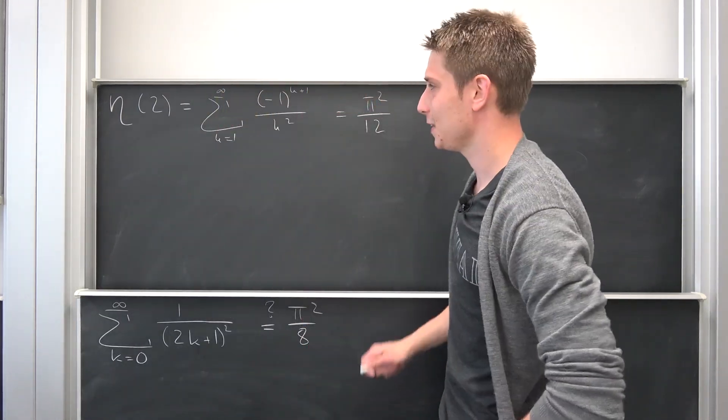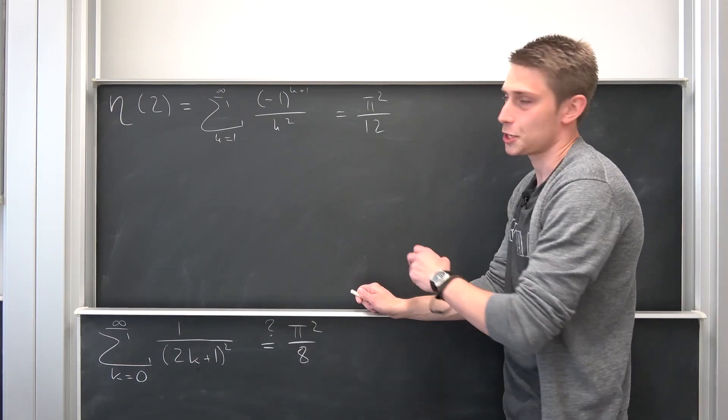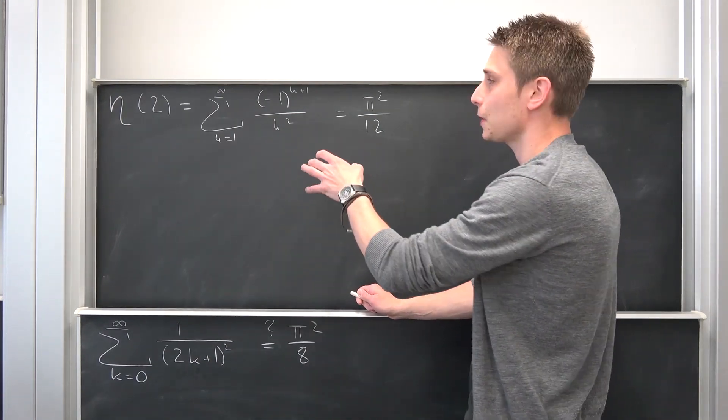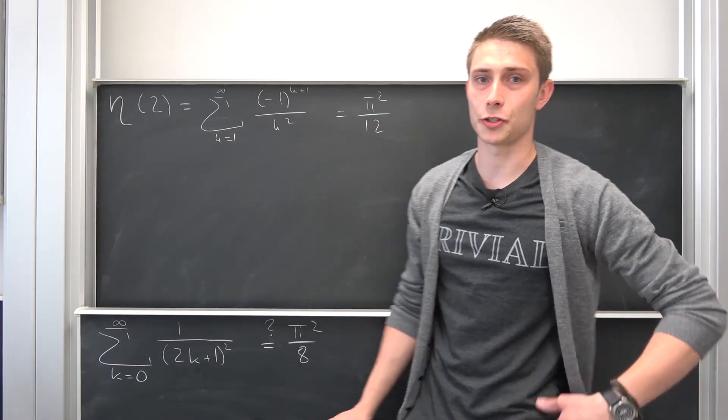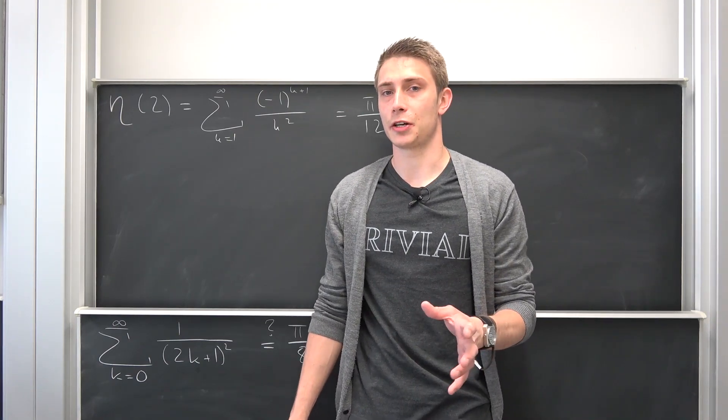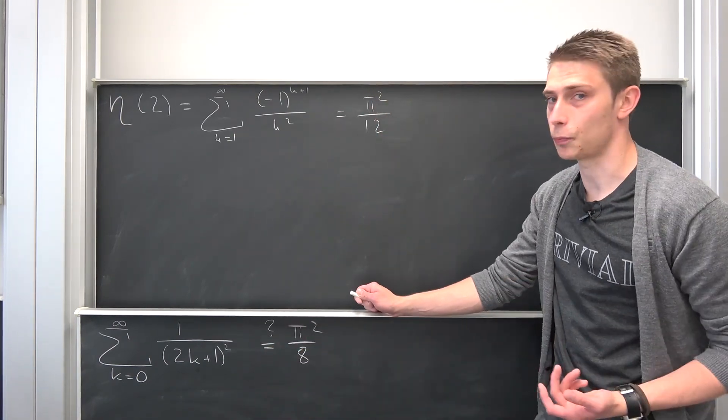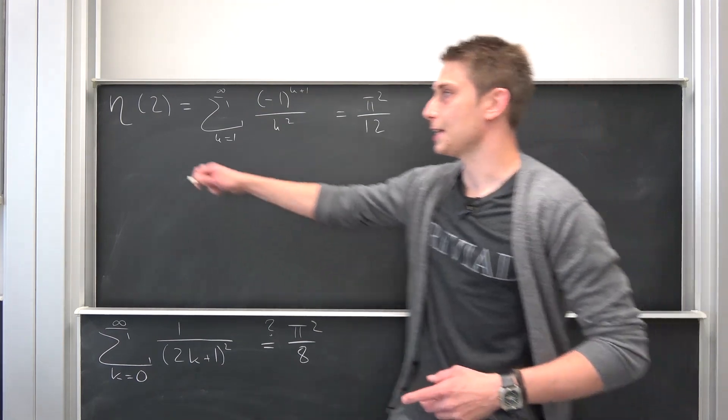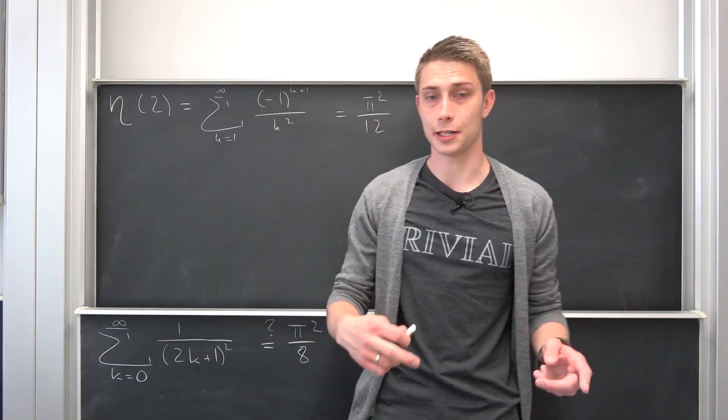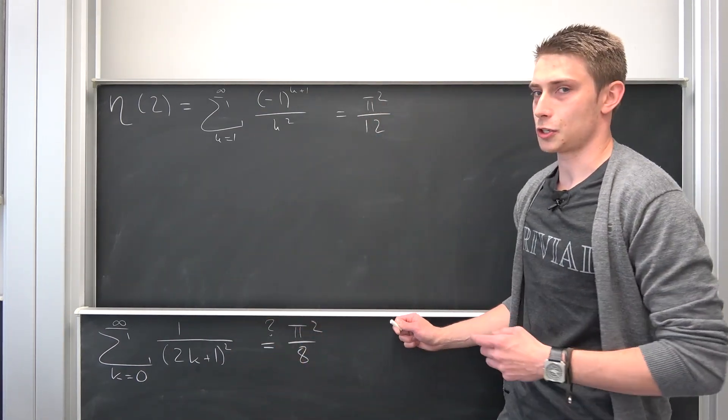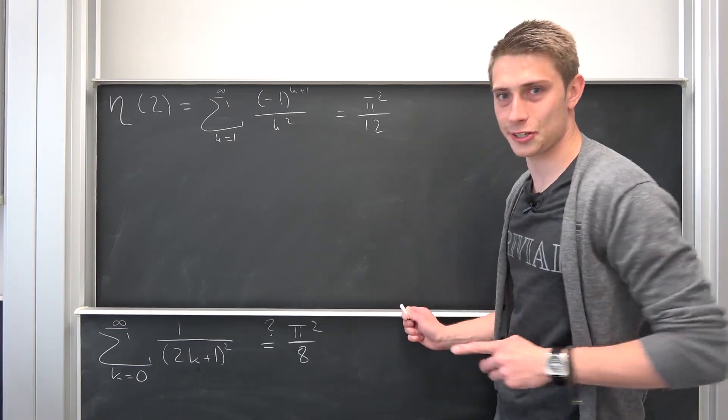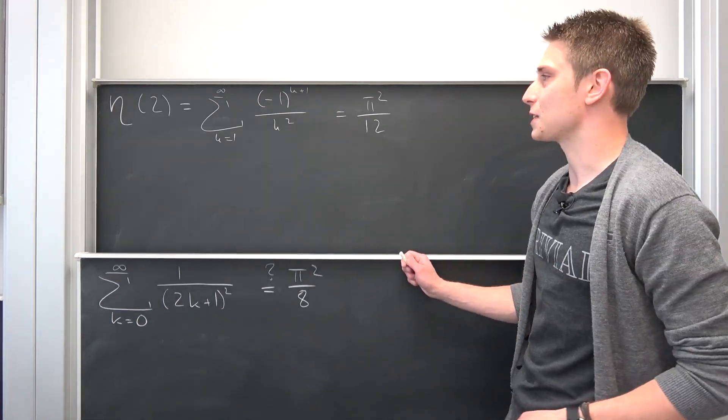I still have one video to do to show that we can algebraically manipulate this Dirichlet eta function of 2 into the Riemann zeta function of 2, pi squared over 6, the Basel problem. The Dirichlet eta function is used to analytically continue our Riemann zeta function. But don't tell anyone, this is a secret. Illuminati wants to keep this a secret, my boys.